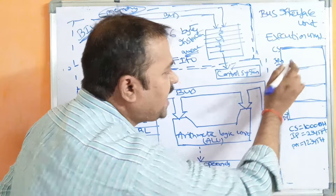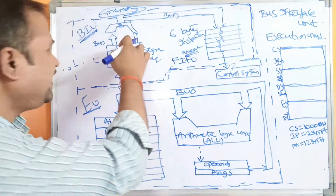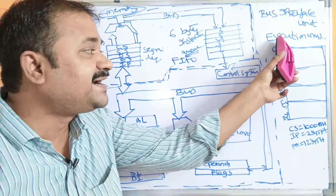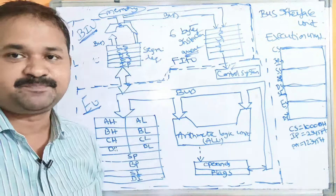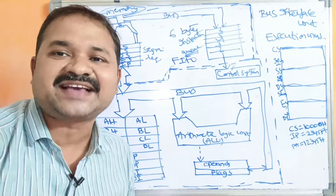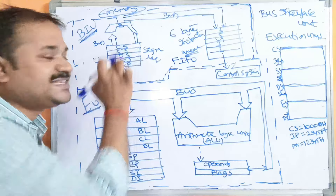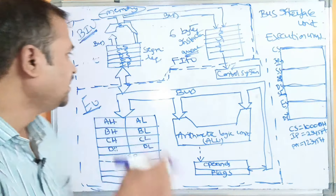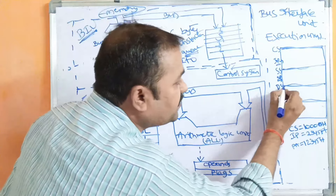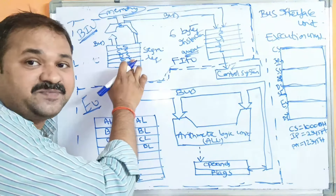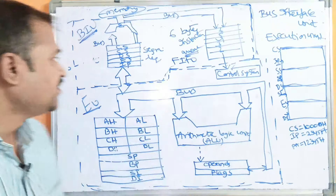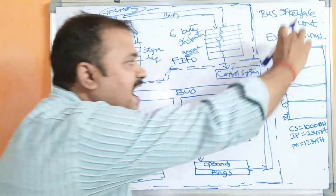The CS register contains the starting address of the Code Segment. For example, if the Code Segment address is 1000, that value is stored in CS. Similarly, SS stores 2000 as the starting address of the Stack Segment. DS and ES store the starting addresses of their respective segments. These registers hold the addresses of the corresponding memory segments.